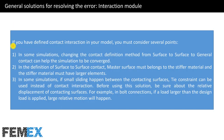If you have defined contact interaction in your model, several points must be considered. In some simulations, changing the contact definition method from surface-to-surface to general contact can help the simulation converge. In surface-to-surface contact, the master surface must belong to the stiffer material, and the stiffer material must have larger elements. In some simulations with small sliding between contacting surfaces, tie constraints can be used instead of contact interaction, but verify the relative displacement of contacting surfaces first.